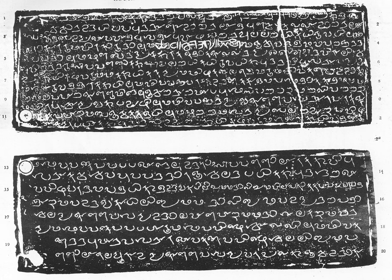Vatteluttu was the common script for writing various forms of Tamil language in the Pandya-Chera region till the 9th century, and after that time it came to be replaced by the present-day Tamil script everywhere except in Kerala. It is known that the Tamil script became current in the Chola and Pandya kingdoms by the 10th century.